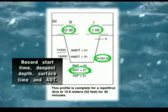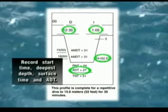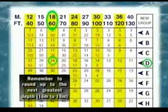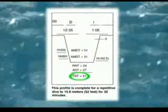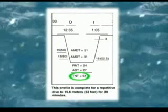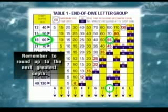Recording your repetitive dive is similar to recording your first dive. However, this time you have residual nitrogen in your body, and you must consider that before you find your new letter group. Find your RNT for your depth and letter group on table three and record it. Add your ADT to your RNT to get your TNT. Go back to table one to find your new letter group and record it.